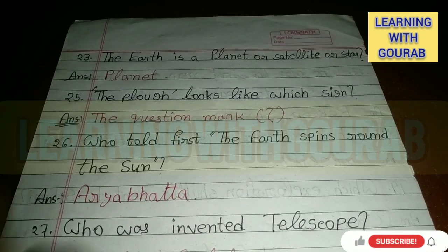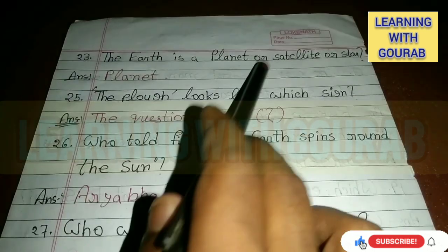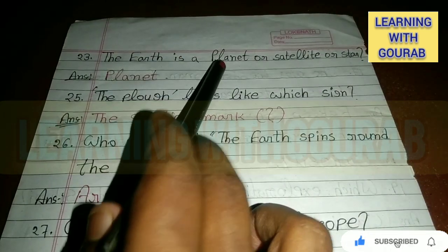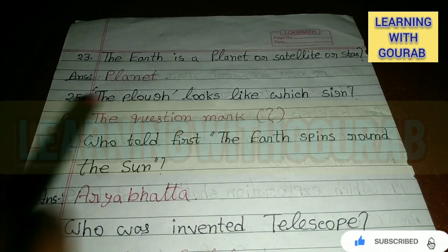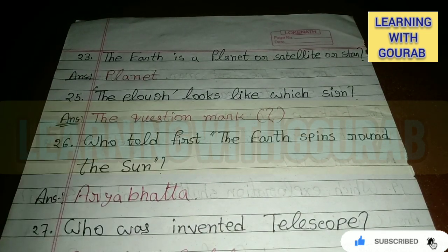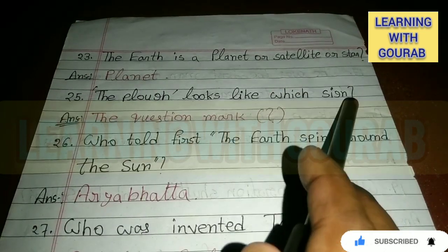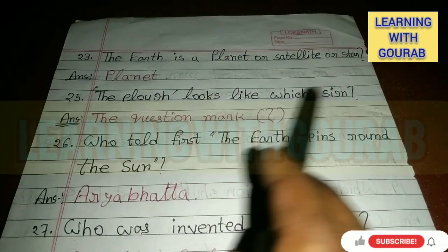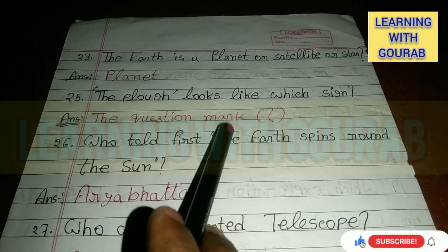Is the Earth a planet, satellite, or star? Answer: Planet. What does the Plough constellation look like? Answer: A question mark.